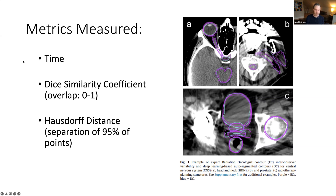They measured most interestingly time — how long did experts versus the deep-learning-based automated system take? They also applied objective measures of similarity using the Dice similarity coefficient and Hausdorff distance, which measures the separation of 95% of the points in each structure. Both give an objective measure of how similar the two shapes are.